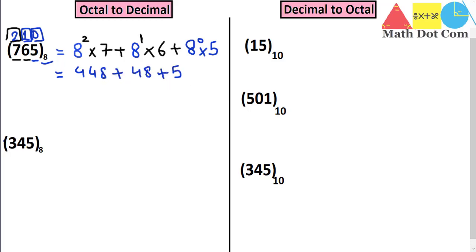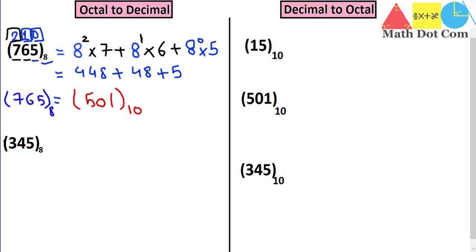Since 8 raised to the power 0 equals 1, the final result is 501. So 501 is the decimal equivalent of the octal number 765.